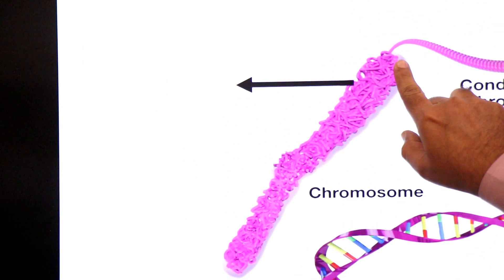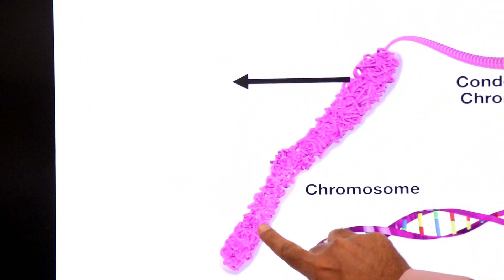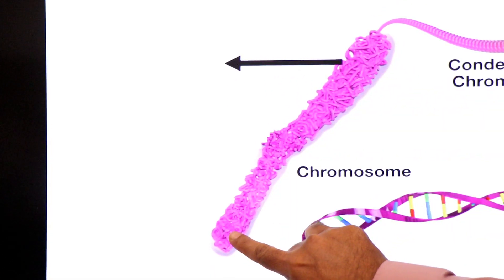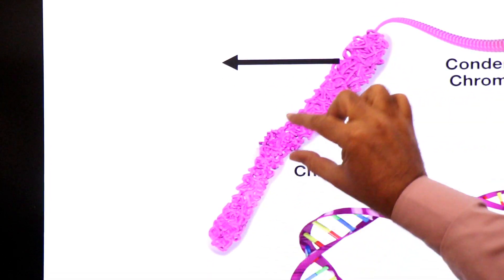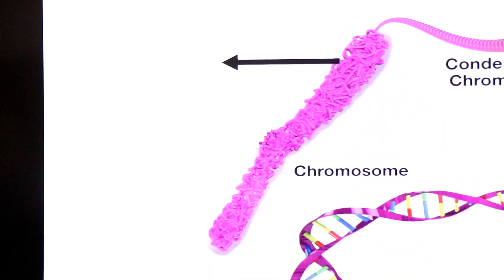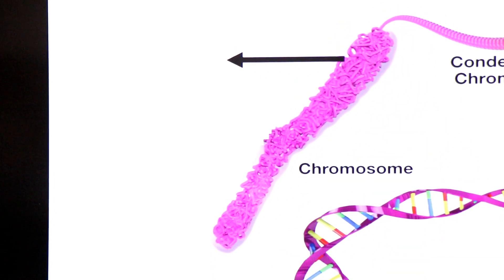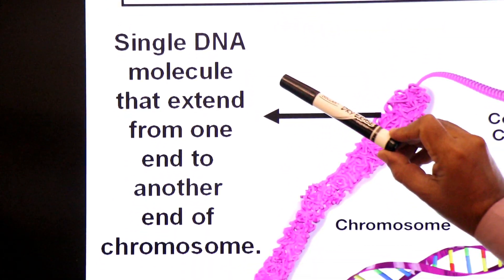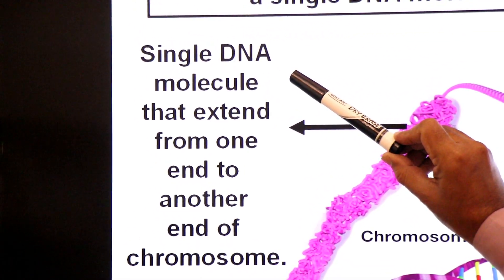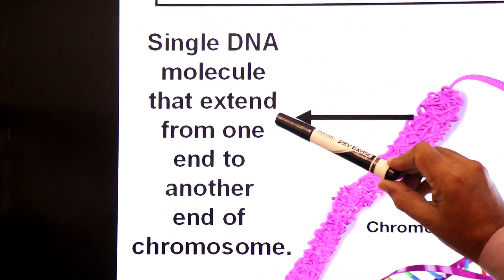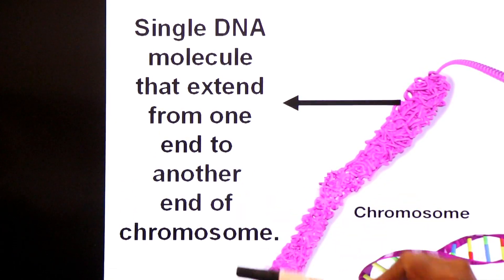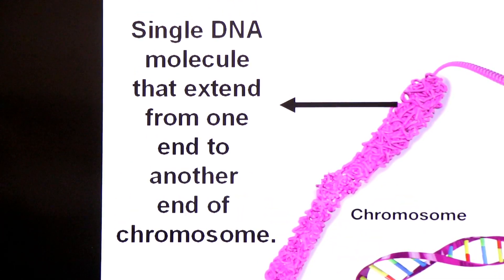One chromosome has one end, and another end. A single molecule of DNA extends from one end to another end of the chromosome.